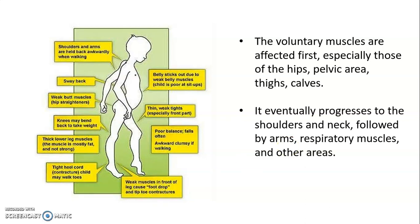Later, DMD progresses to affect the shoulder and neck, followed by the arms. Eventually the respiratory muscles are also involved, after which the child requires respiratory support.